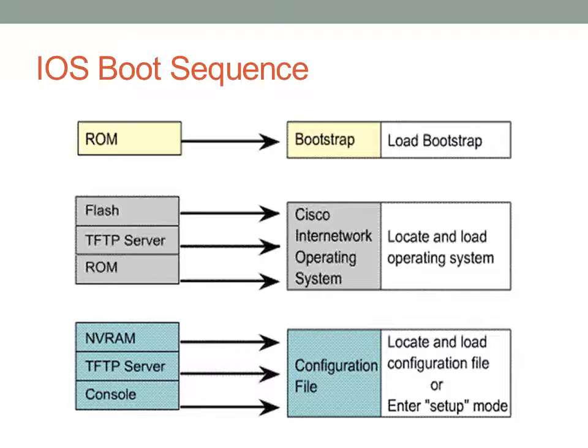After the IOS loads, the configuration file is loaded. Typically this is done from NVRAM on the local device, but it's also possible to pull the configuration from a TFTP server or over the console. The IOS boot sequence overview: it loads the bootloader, then pulls an IOS image, decompresses it, and loads a configuration file to apply actual interface and virtual configuration.